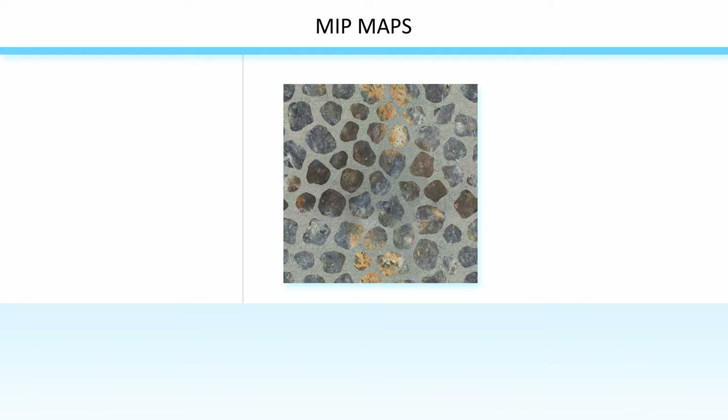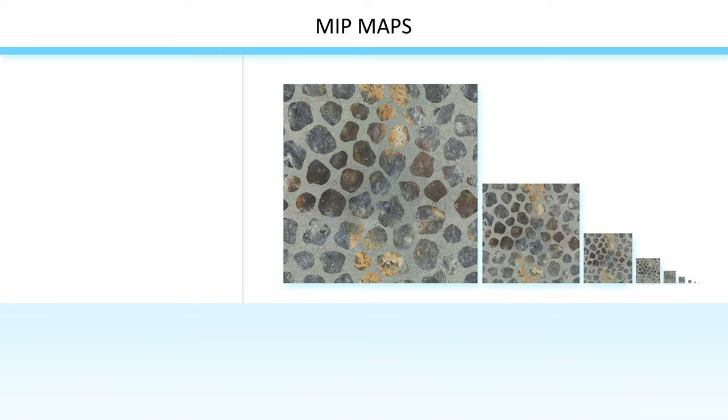It makes mipmaps. Mipmaps are a series of progressively smaller versions of the texture. Each one is half as large as the previous version in both dimensions, and they're all stored together as a single file with the original texture.